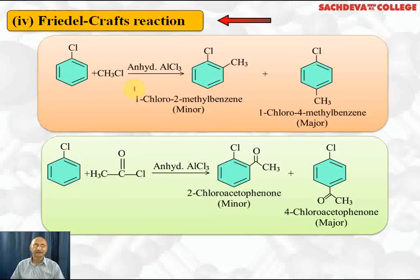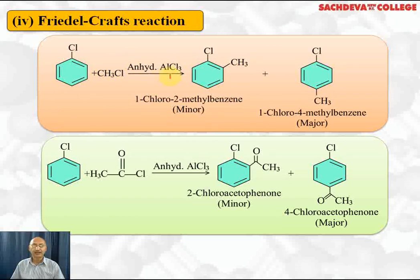Next, Friedel-Craft alkylation: chlorobenzene reacts with chloromethane in the presence of anhydrous AlCl₃. AlCl₃ reacts with CH₃Cl to form AlCl₄⁻ and CH₃⁺. CH₃⁺ is the electrophile, which replaces H⁺ to give 1-chloro-2-methylbenzene (orthochlorotoluene) and 1-chloro-4-methylbenzene (parachlorotoluene). Parachlorotoluene is the major product.